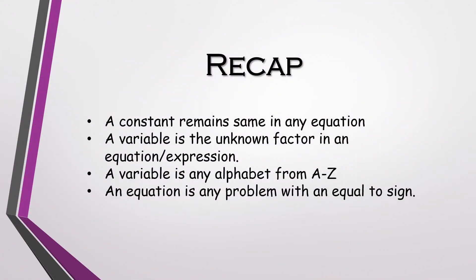Before I start the video, I am going to do a quick recap of what we discussed in the previous video. A constant remains the same in any equation. A variable is the unknown factor in an equation or an expression. A variable is any alphabet from A to Z. And an equation is any problem with an equal to sign. These are the main points we discussed in our previous video.